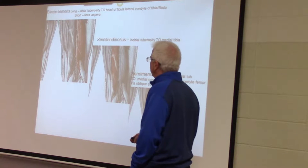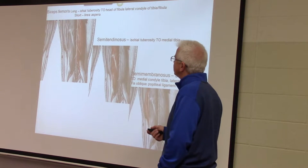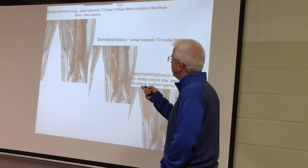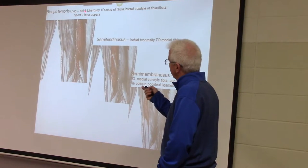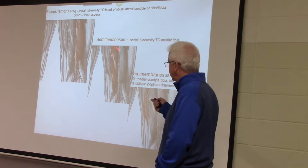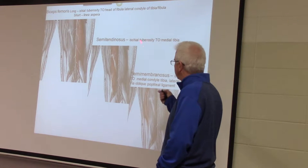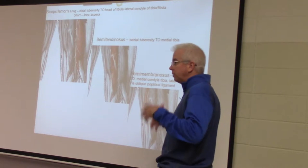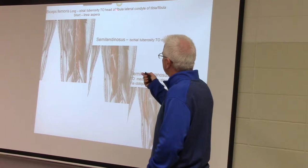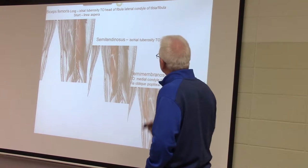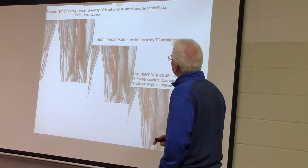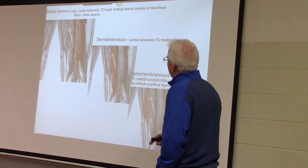Here are the hamstrings. The lateral mass of muscle is the biceps femoris — there are two heads, a long head and a short head. Notice that the long head, along with the medial muscle groups of the hamstrings — the semitendinosus and semimembranosus — all attach to the ischial tuberosity, all the way up to the butt bone. Three of the four also attach to the head of the fibula and the lateral condyle of the tibia and fibula.